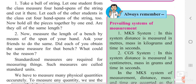There are systems used for measurement. The MKS system: M stands for meter (distance), K stands for kilogram (mass), and S stands for seconds (time). In the MKS system, distance is measured in meters, mass in kilograms, and time in seconds.